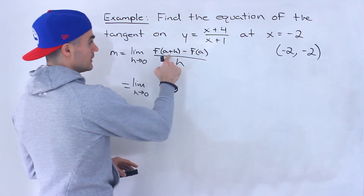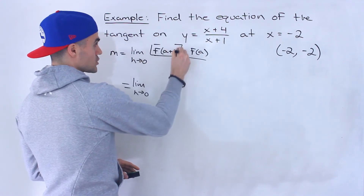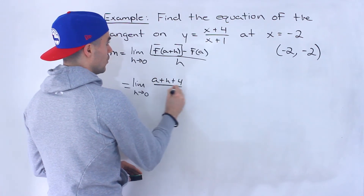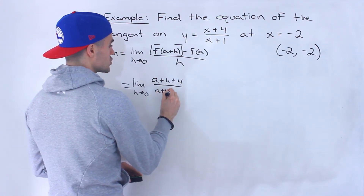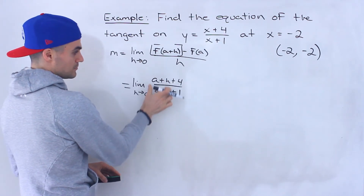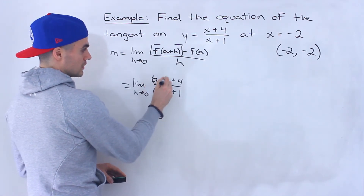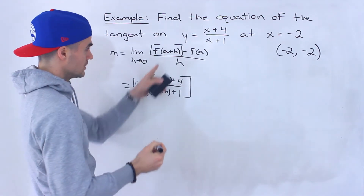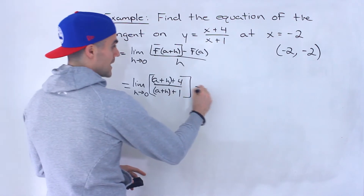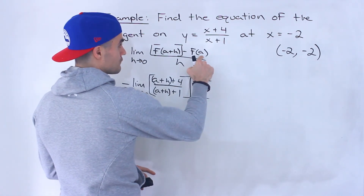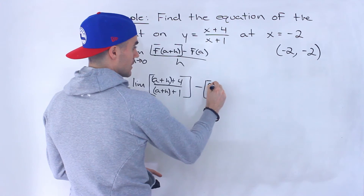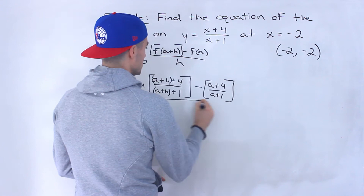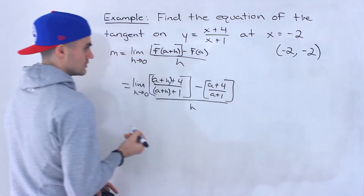We plug in (a + h) for x in f(a + h), giving us (a + h + 4) / (a + h + 1). Then we subtract f(a), which is obtained by plugging in a for x, giving us (a + 4) / (a + 1). All of that is over h.